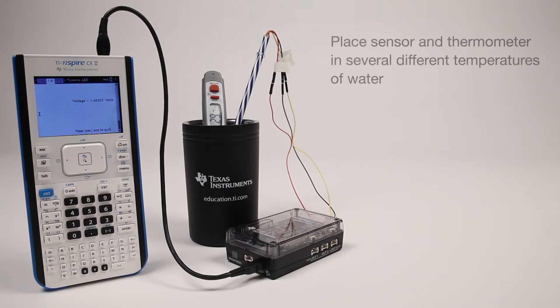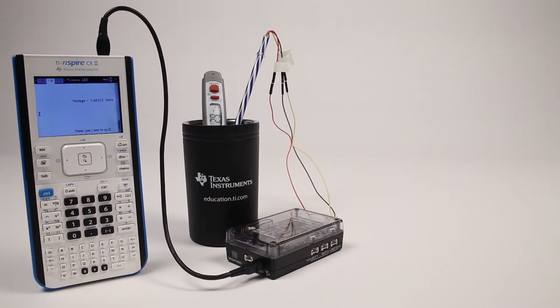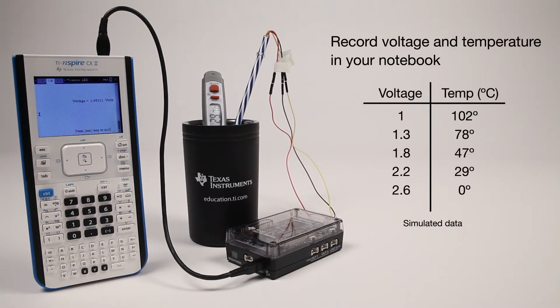When calibrating your sensor, place the sensor and thermometer in several different temperatures of water. Record both the voltage produced by the sensor and the temperature displayed on the lab reference thermometer. Record this ordered pair in your notebook.